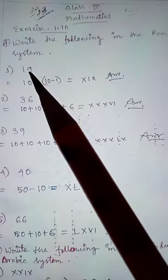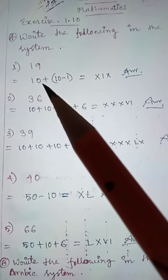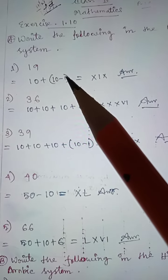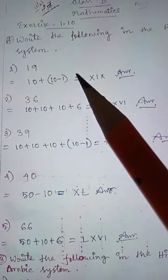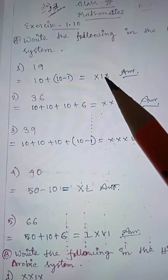Problem 1: 19. This is written as 10 plus (10 minus 1). So we have 10, which is X, and 10 minus 1 is 9, written as IX. Therefore, 19 equals XIX.